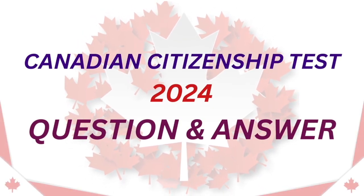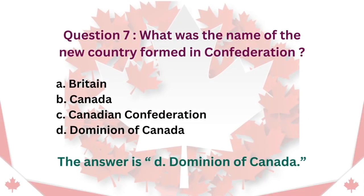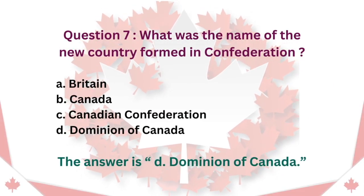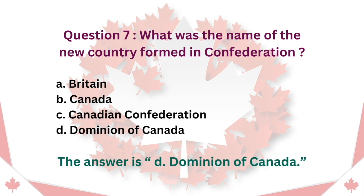Canadian Citizenship Test Question and Answer. Question 7: What was the name of the new country formed in Confederation? A. Britain. B. Canada. C. Canadian Confederation. D. Dominion of Canada. The answer is D. Dominion of Canada.